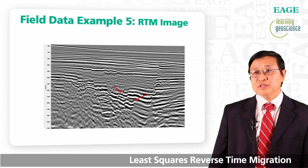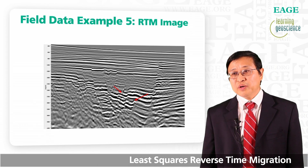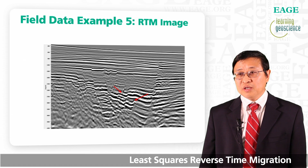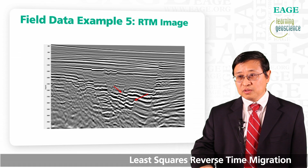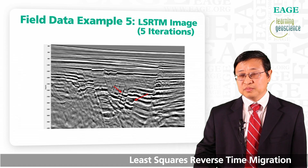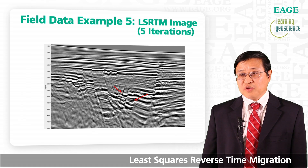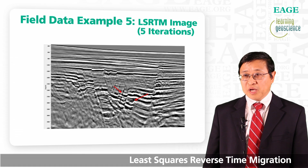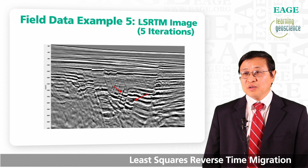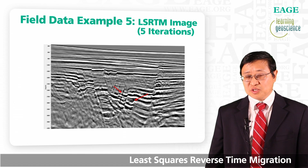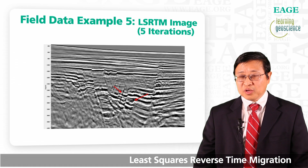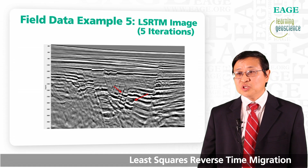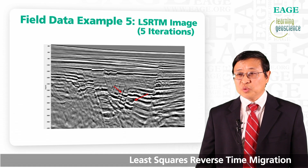Here is the final example — regular RTM versus least squares RTM. Least squares RTM is able to image steep dips much better and also gives higher resolution both vertically and laterally. Looking in more detail at the second arrow location, you can see event termination. However in regular RTM it is not clear, but in least squares RTM, event termination is so sharp it stops right at the fault. The reason is that any time you have event termination you have diffraction energy. Regular RTM is not able to pick up this weak diffraction energy, but in the later iterations of least squares RTM, you are able to pick up this diffraction energy and create a sharper event termination.